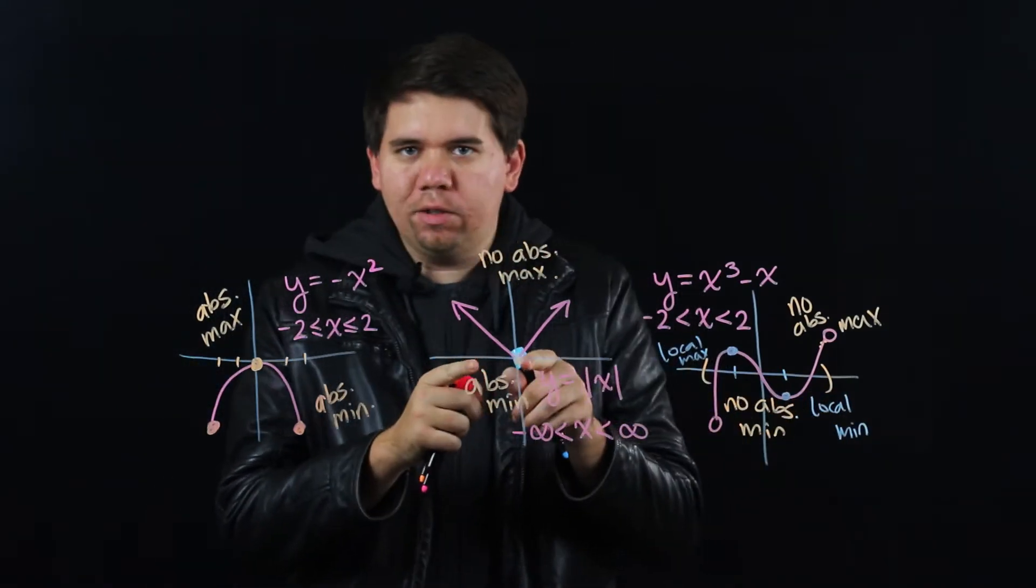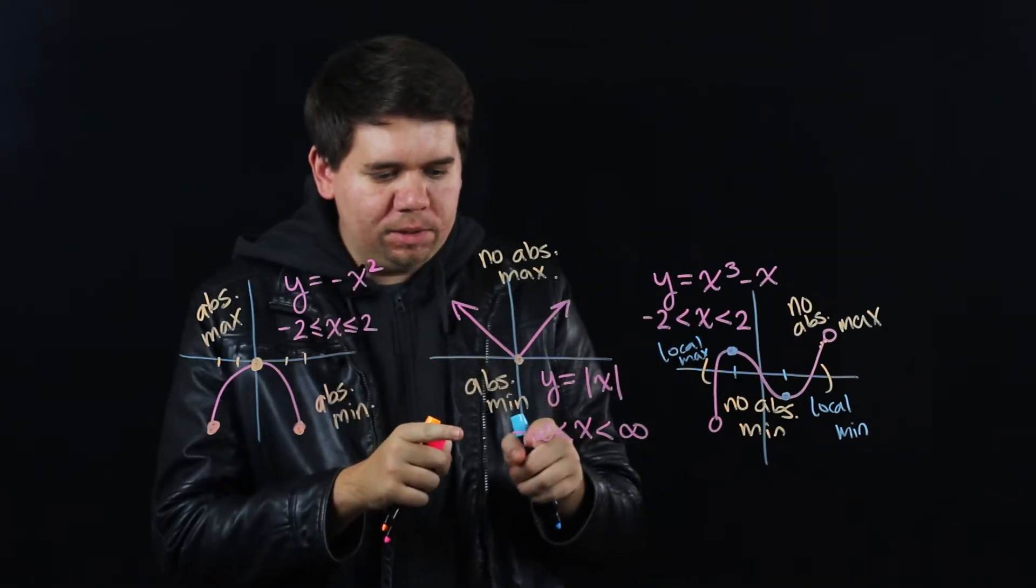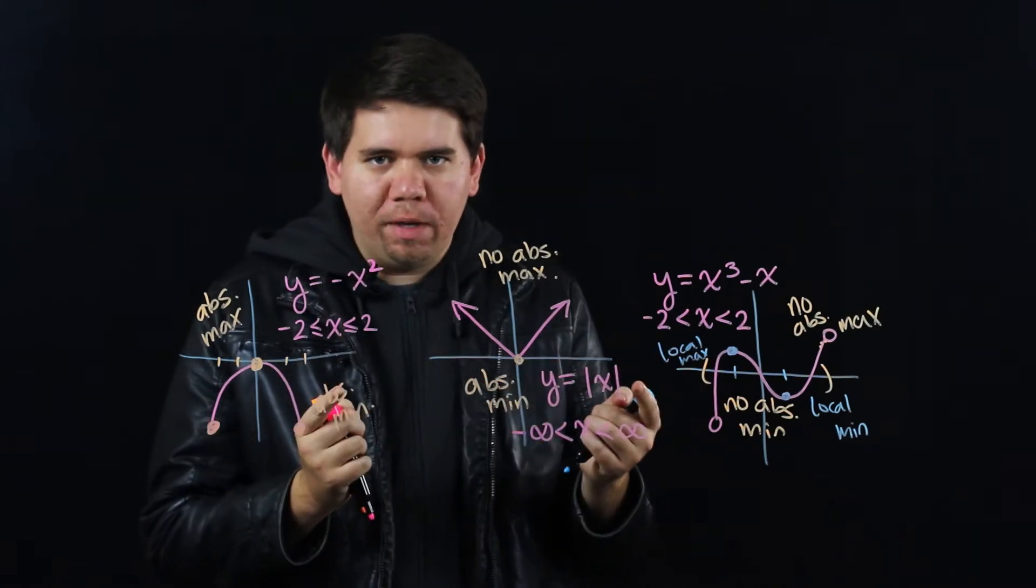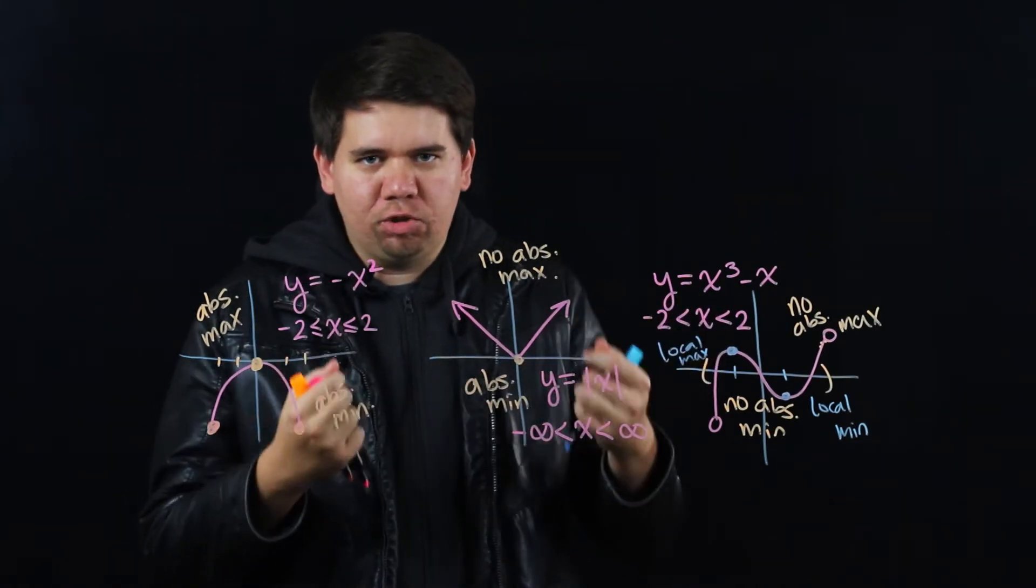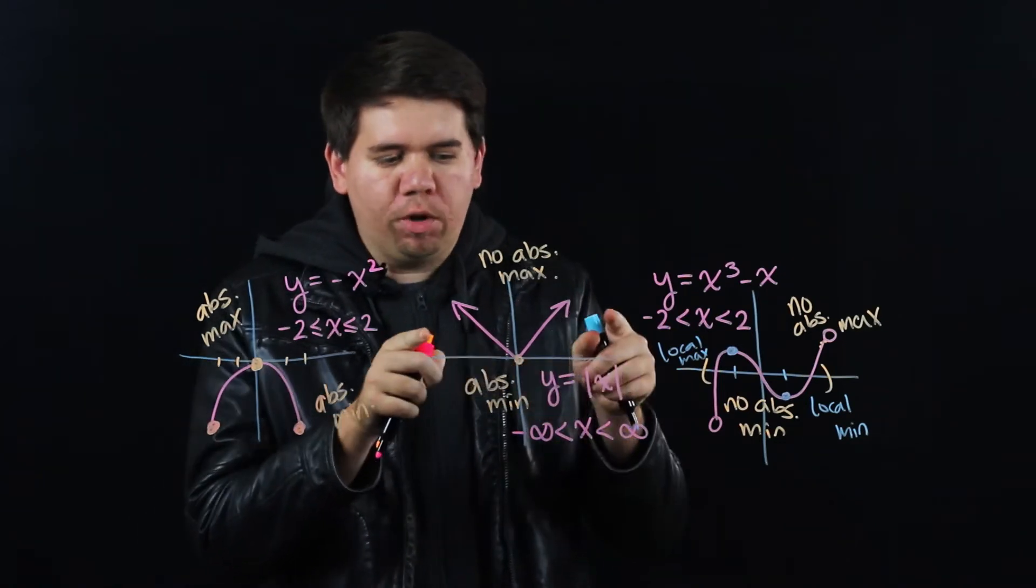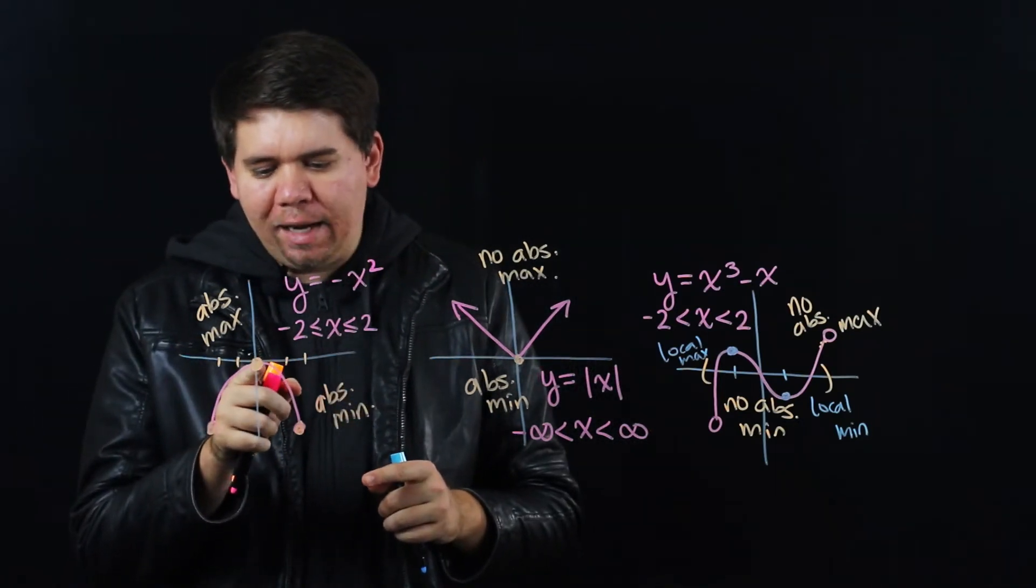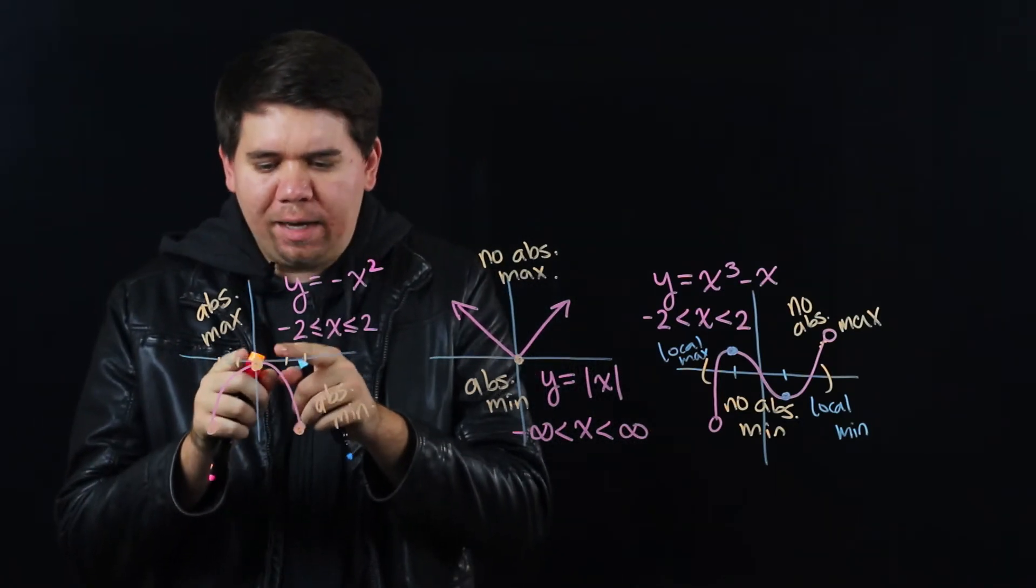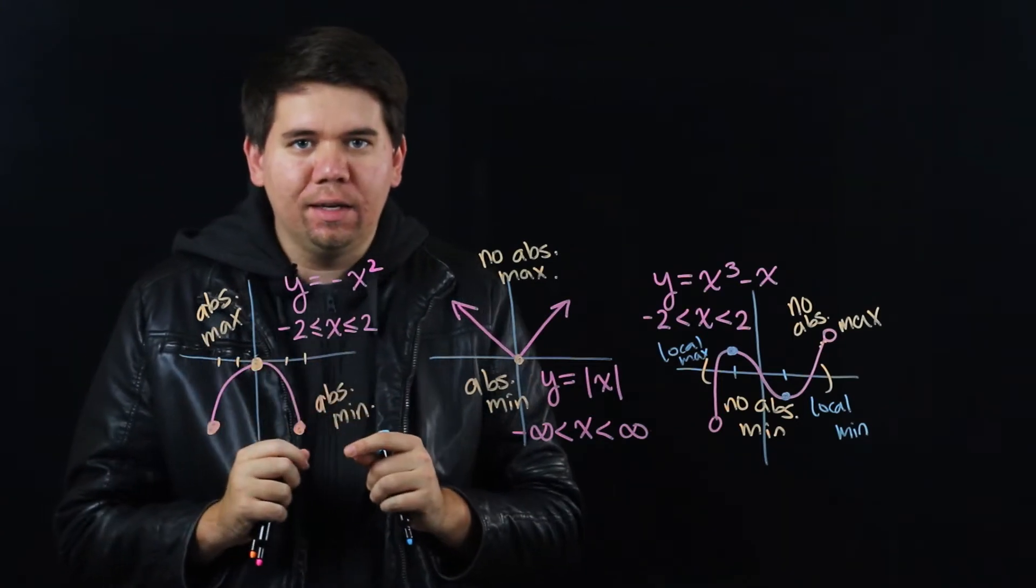If we go back to the second graph, you just have your absolute minimum. You might want to call this a local minimum. You can call it a local minimum, but saying it's an absolute minimum is saying something stronger. It's a minimum in this local area, but it's actually a minimum over the whole thing. And same story here. This absolute maximum is a local maximum, but it's really an absolute maximum because it's a maximum over the whole defined area.